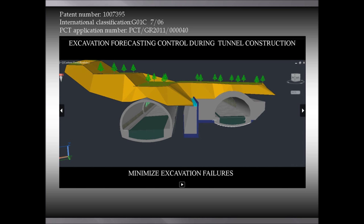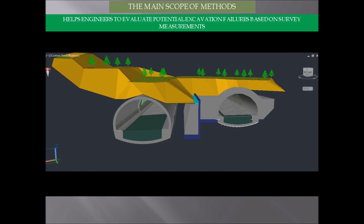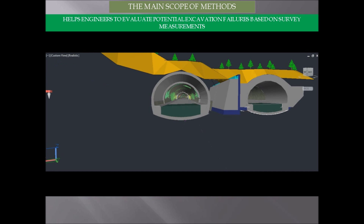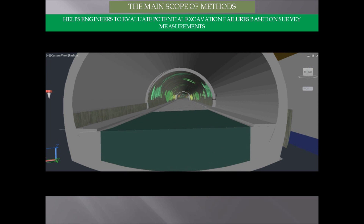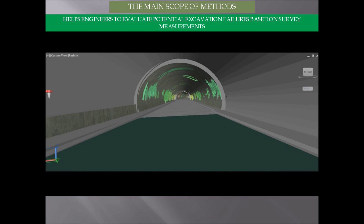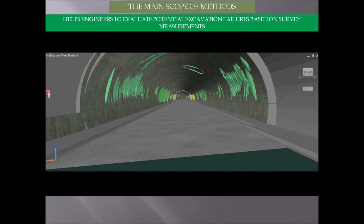Welcome to the Excavation Forecasting Control During Tunnel Construction — a revolutionary and patented method able to minimize excavation failures. The main scope of this method is to help engineers evaluate potential excavation failures based on survey measurements, contributing to avoid underbreak and overbreak issues.